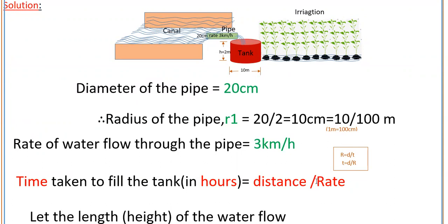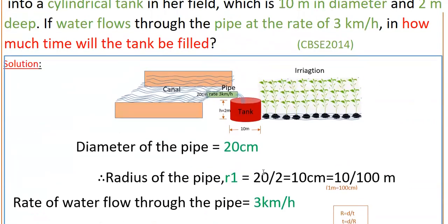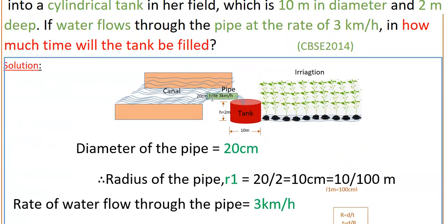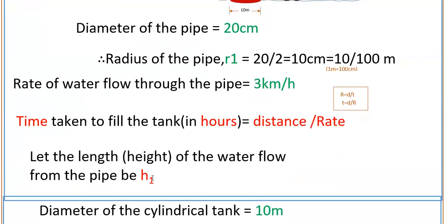We know that rate is equal to distance by time, so time is equal to distance by rate. The time taken to fill the tank in hours is equal to distance by rate. Using this formula we can find the time taken to fill the tank. Let the length of the water flow from the pipe be h1, so we have to find the length of water flow through this pipe — assume that length be h1.